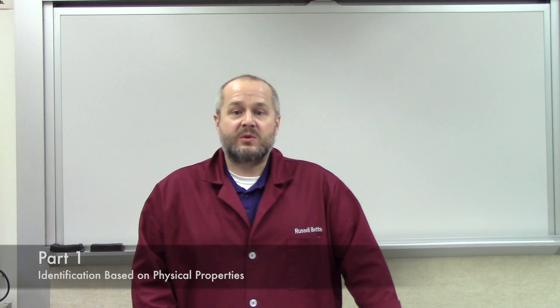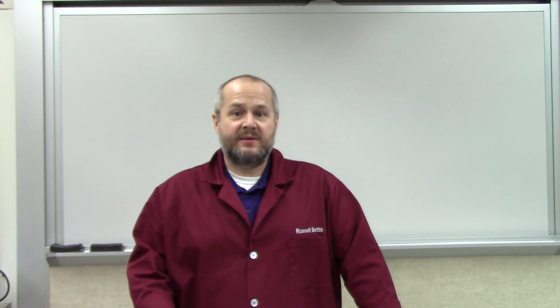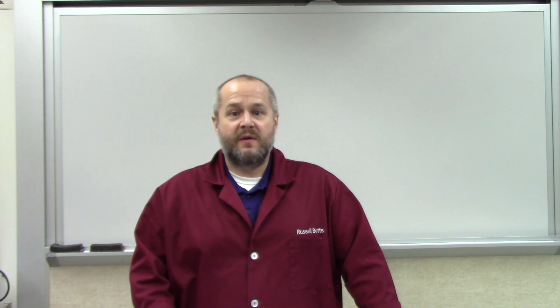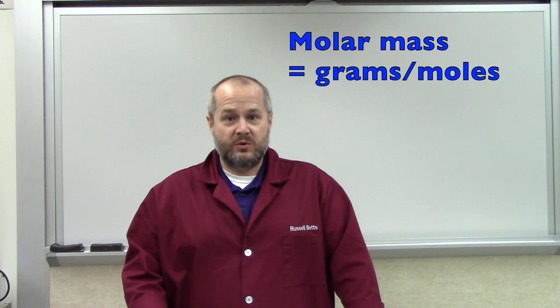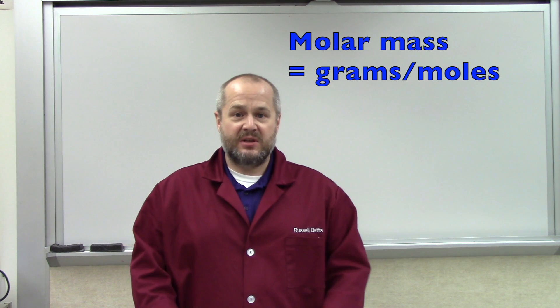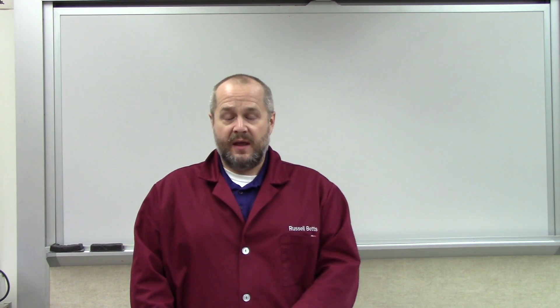Part one will be identifying the elements based on physical properties. We're going to have boxes of elements set out around the lab. What we want you to do is look at them, examine them, and write down some of the physical properties you can observe just by looking at a purified element. Part two will be identifying an element based on molar mass — we have some baggies of metals with the number of moles of the metal written on them.